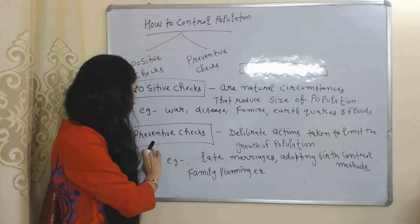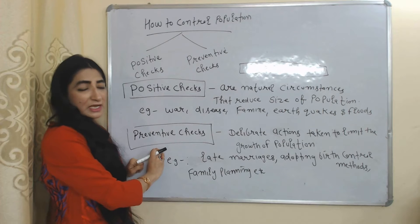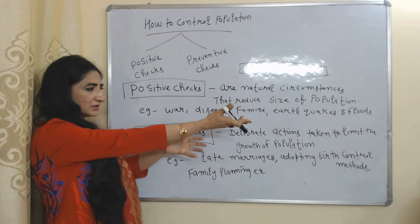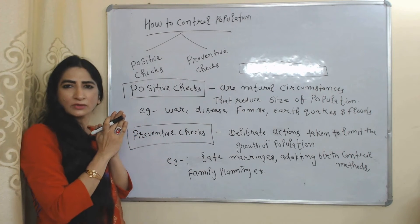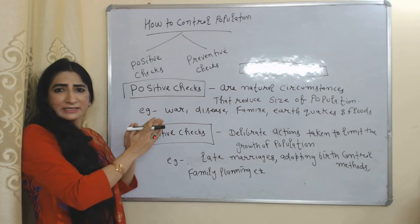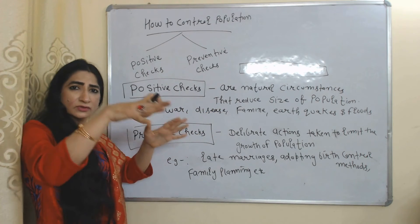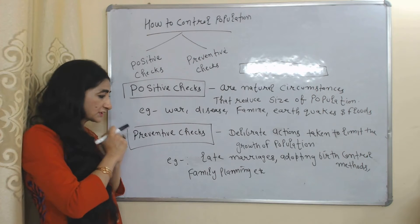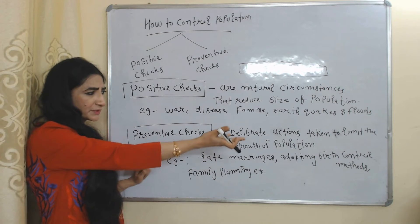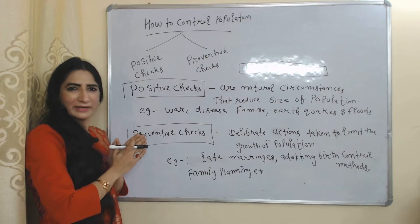The second way to control population is preventive checks. Preventive checks are deliberate actions taken to limit the growth of population. For example, late marriages, adopting birth control methods, or proper family planning.